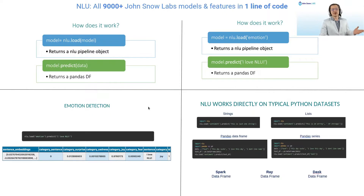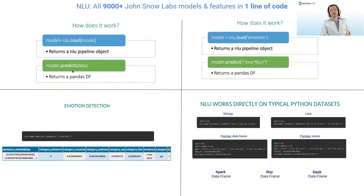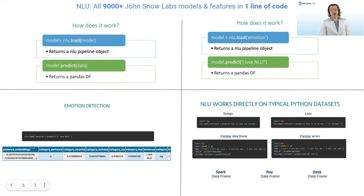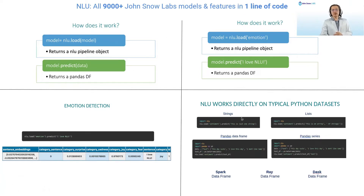How does it work? You simply need to know two functions. The NLU.load method, which takes in the name of a model and returns a model object. On this model object, you can call .predict. For example, you could say NLU.load('emotion') and then call .predict on the model. This will return the predicted result — joy — in a pretty pandas dataframe with all extra features in separate columns. This works on all pythonic data structures like strings, lists of strings, pandas dataframes, and other dataframes like Spark, Ray, or Dask.